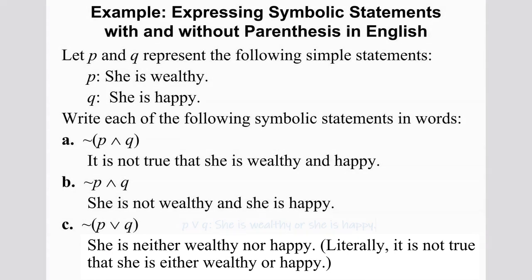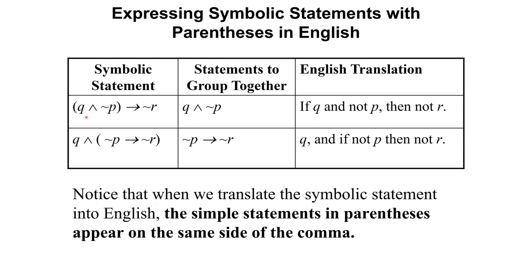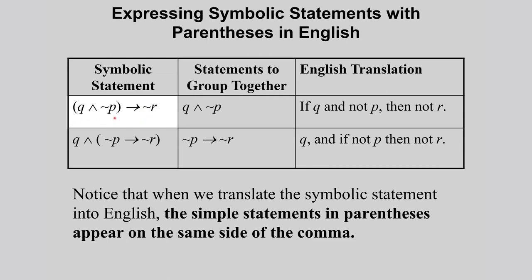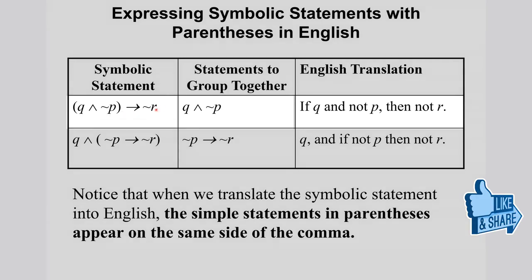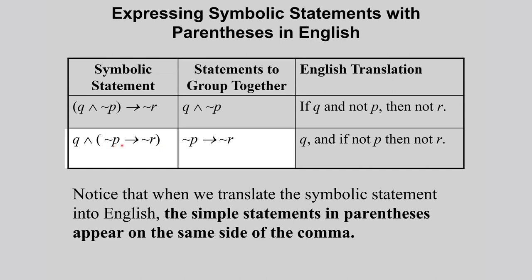Now for more complicated symbolic statements with parentheses and a conditional, the statement inside the parentheses is grouped together. In this case, Q and not P are grouped together, and the English translation is: 'if Q and not P, then not R.' In this other example, the expression is grouped differently, and the English translation would be: 'Q and if not P then not R.'